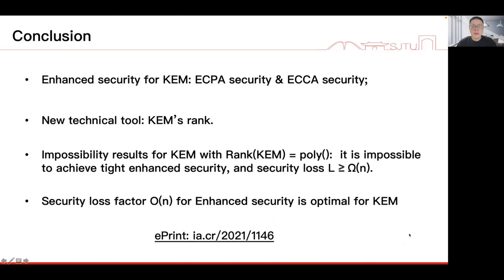Let me now conclude and sum up our contributions. We define realistic enhanced security models for KEM, which considers adaptive user corruptions and adaptive encapsulated key reviews in the multi-user and multi-challenge setting. We develop a new technical tool called KEM's rank to identify a class of KEM schemes for which impossibility of tight reduction holds. We prove that as long as the rank of a KEM scheme is polynomially bounded, the incurred security loss factor is at least linear in the number n of users when reducing to any non-interactive assumptions. Our impossibility results rule out tight enhanced security of many well-known KEMs, including Cramer-Shoup and Kurosawa-Desmedt. Finally, we show the linear security loss is achievable and optimal for KEMs with polynomially bounded rank. For more details, please check out our paper on ePrint. Thank you for listening.